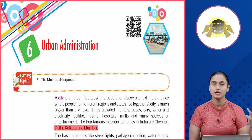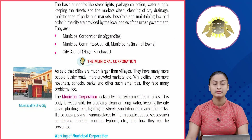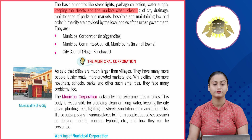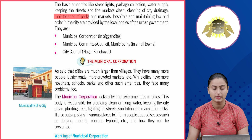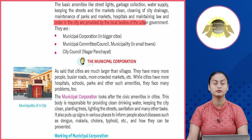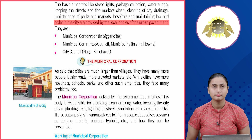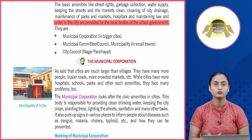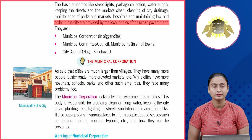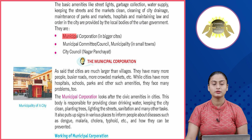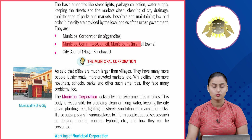The basic amenities like street lights, garbage collection, water supply, keeping the streets and markets clean, cleaning of city drainage, maintenance of parks and markets, hospitals, and maintaining law and order in the city are provided by the local bodies of the urban government. These local bodies must provide amenities like street lighting, electricity supply, and water supply to their particular location.